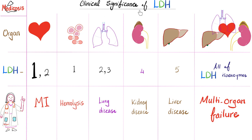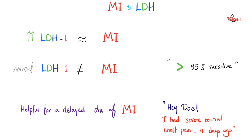The clinical significance: the heart has LDH1 and LDH2. If both are elevated and especially LDH1 is higher than LDH2, this is most likely myocardial infarction. LDH1 is very sensitive — a normal LDH1 almost excludes the diagnosis of myocardial infarction. It's more than 95% sensitive, so it rules out the disease.